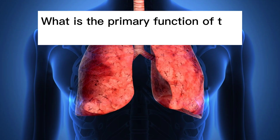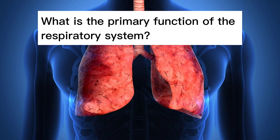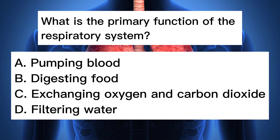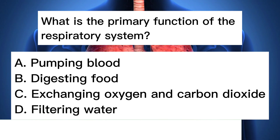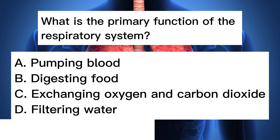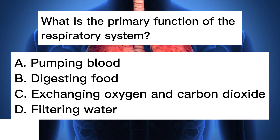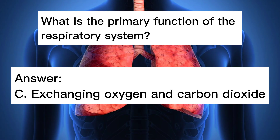What is the primary function of the respiratory system? A. Pumping blood. B. Digesting food. C. Exchanging oxygen and carbon dioxide. D. Filtering water. Answer: C. Exchanging oxygen and carbon dioxide.